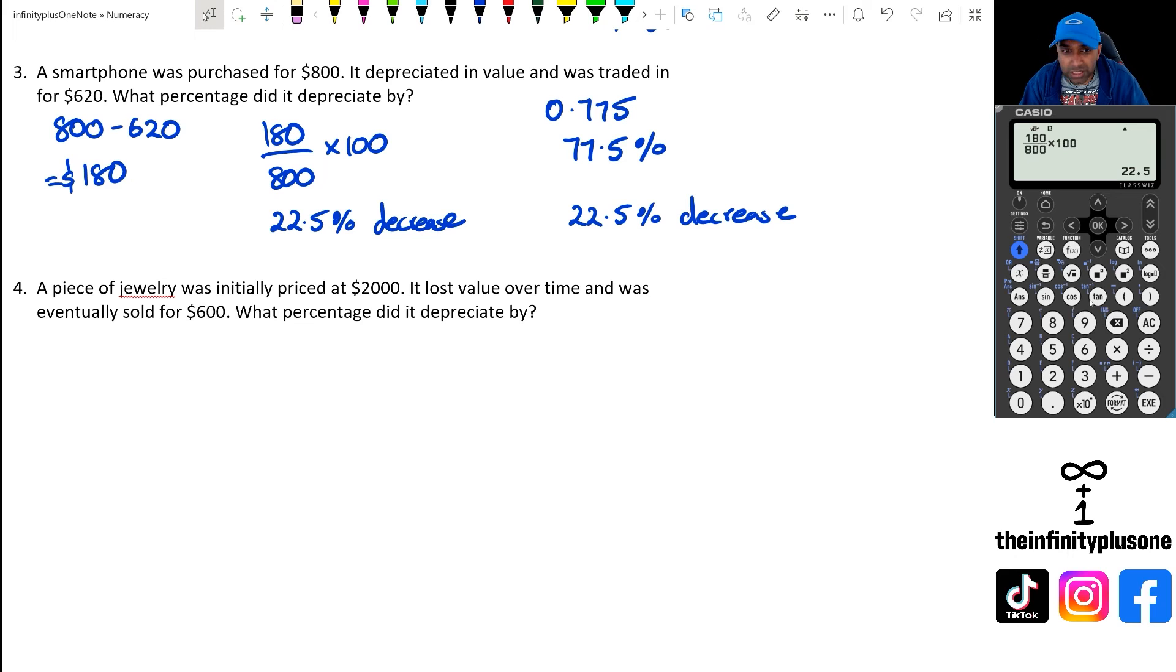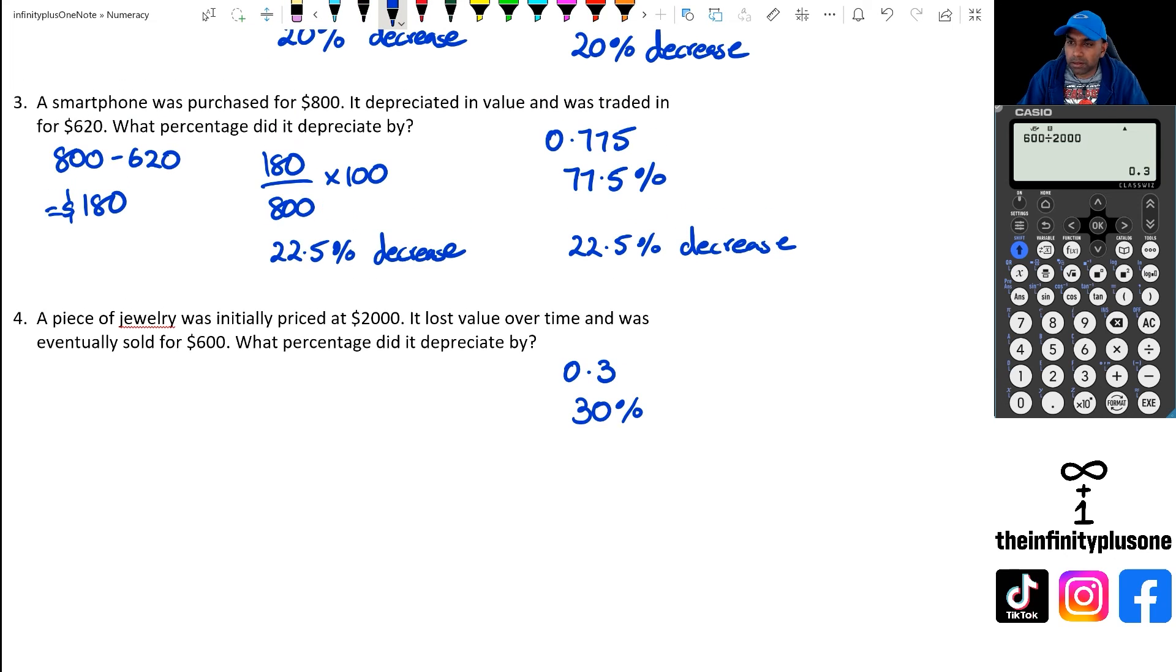For the last question here, we've got something that's priced at $2,000 and it's eventually sold for $600. So we're going to go 600 divided by 2000. And when we do this, we are going to get 0.3. Now 0.3 means that this is actually 30% of its original value. Because it's at 30% of its original value, that means it's actually reduced by 70%.